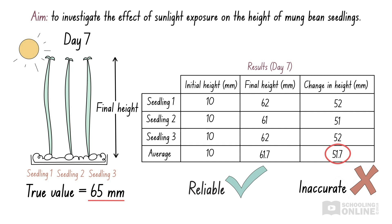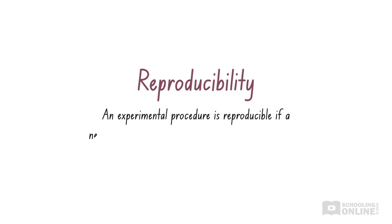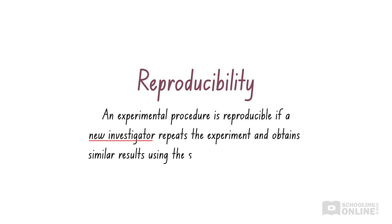Another aspect of reliability is reproducibility. An experimental procedure is reproducible if a new investigator repeats the experiment and obtains similar results using the same method and equipment. A reliable experiment is one with a high degree of reproducibility.